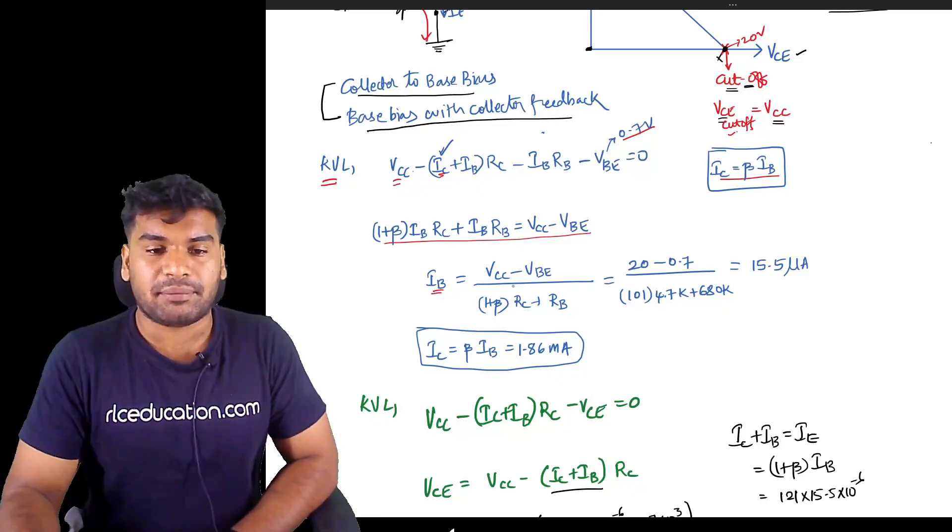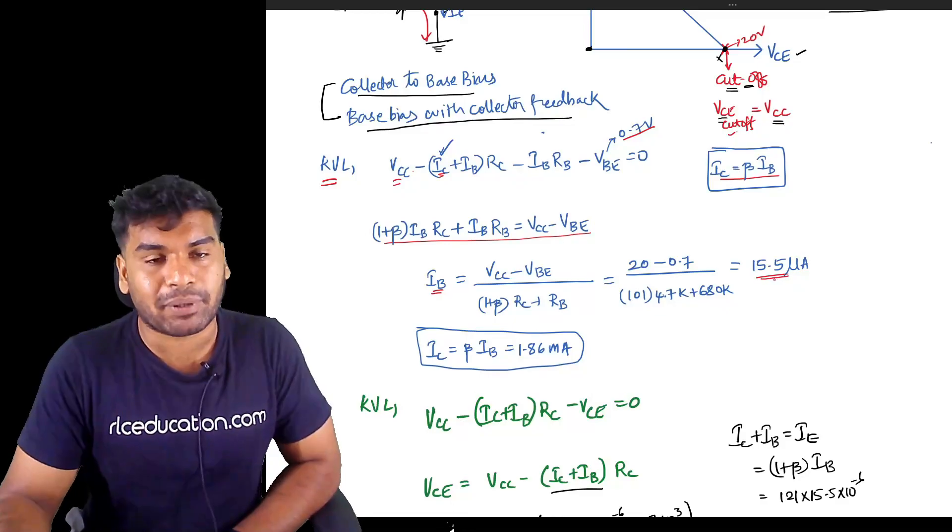Finally I will get the value of IB like this. Substitute the values, then I will get 15.5 microamperes.